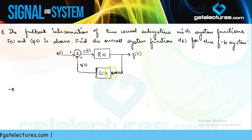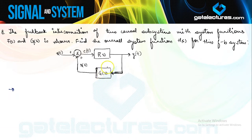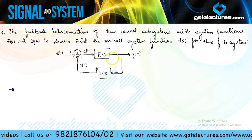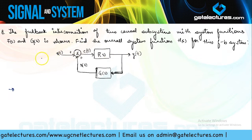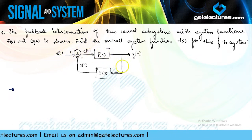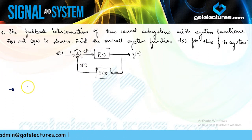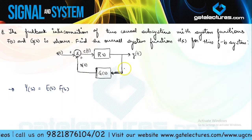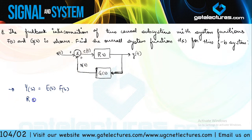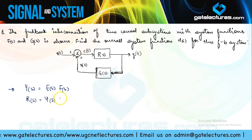We have been given that F(s) and G(s) are causal subsystems and we need to find the overall system function for this feedback system — that is, relate Y(s) and X(s). I start by writing equations: Y(s) = E(s)*F(s), since the input to the forward system is E(t) and output is Y(t). For the feedback path, R(s) = Y(s)*G(s).